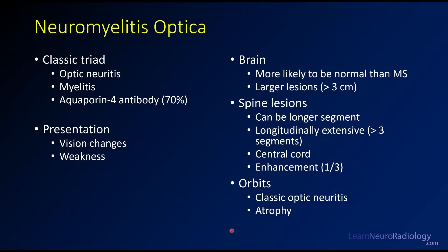This is a case of neuromyelitis optica. This is typically a triad of optic neuritis and myelitis. You usually have an aquaporin-4 antibody, present about 70% of the time. The common presentation is myelopathy or weakness and visual changes. For the brain, it's much more likely to be normal than in MS. The lesions tend to be larger. For the spine lesions, they tend to be longer segments — what we call longitudinally extensive, or more than three vertebral bodies. They tend to involve the central core, with enhancement seen in about one out of three cases. You may see optic neuritis or optic nerve atrophy.